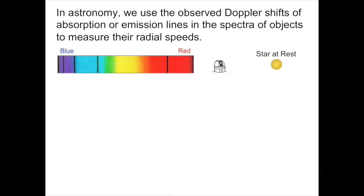In astronomy, we use the observed Doppler shifts of absorption and emission lines in the spectra of objects to measure their radial speeds relative to the Earth. For example, let's say we have a star at rest with respect to us. It's neither moving towards nor away from us. We observe it with our telescope and pass the light through a spectrograph, breaking the light into its rainbow of component colors from blue to red. The spectra of stars are crossed by dark lines called absorption lines. The wavelengths of these lines are very well known because we associate each absorption with atoms or molecules known on Earth, and we know what their wavelengths should be when they're at rest.